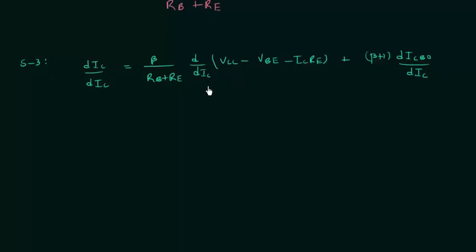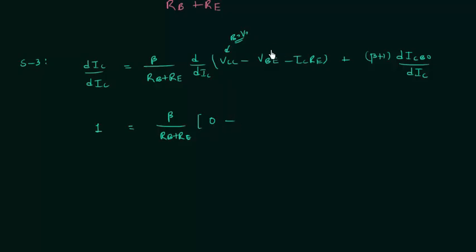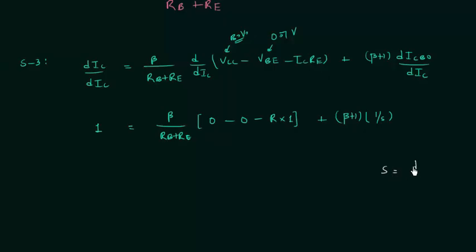In the next step we differentiate VCC, VBE, IC·RE, and the leakage current each with respect to IC. On the left hand side we have: 1 equals β/(RB + RE) times the bracket. Inside the bracket: VCC is constant (biasing voltage), so its differentiation is zero. VBE equals 0.7V for silicon transistor, also constant, so zero. RE is constant and differentiation of IC with respect to IC equals one.